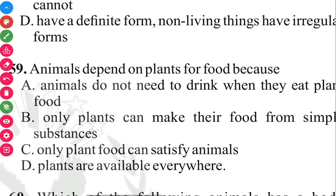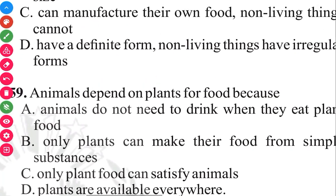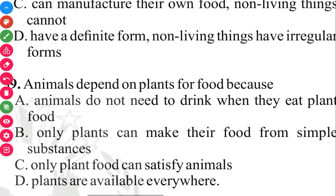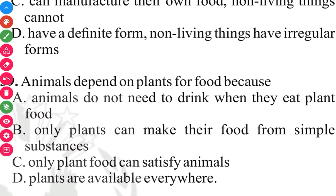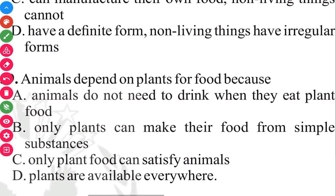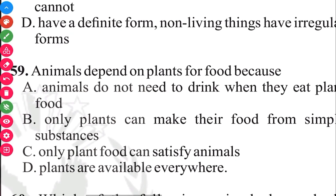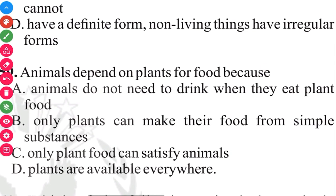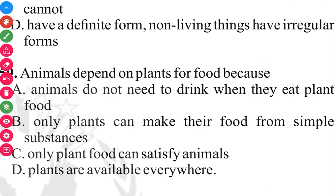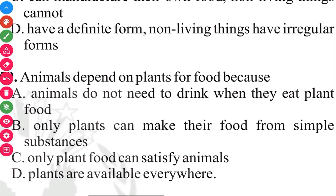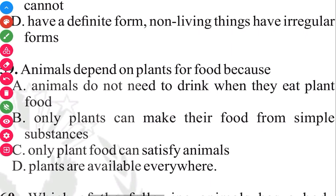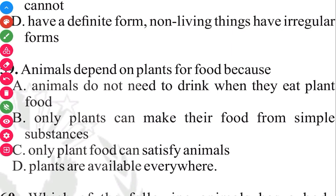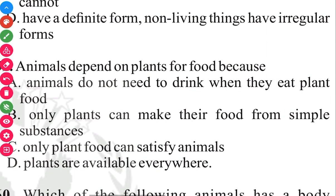Question 59. Animals depend on plants for food because only plants can make their food from simple substances. The answer in 3, 2, 1 is B. Only plants can make their food from simple substances.